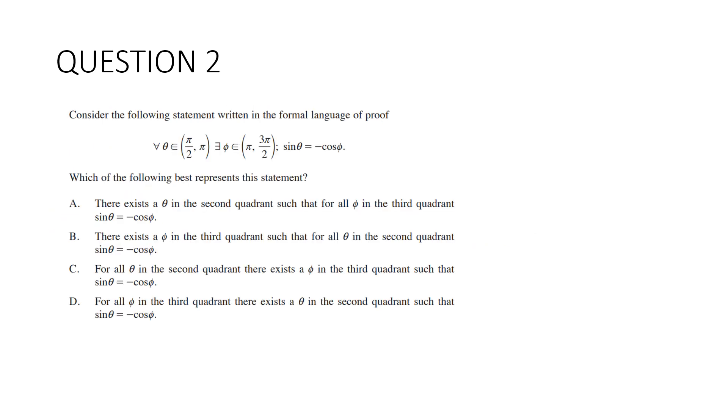Question 2. Consider the following statement written in the formal language of proof. Which of the following best represents this statement? For all theta that lies in the second quadrant, there exists phi that lies in the third quadrant, such that sin theta is equal to negative cos phi. And that is C.